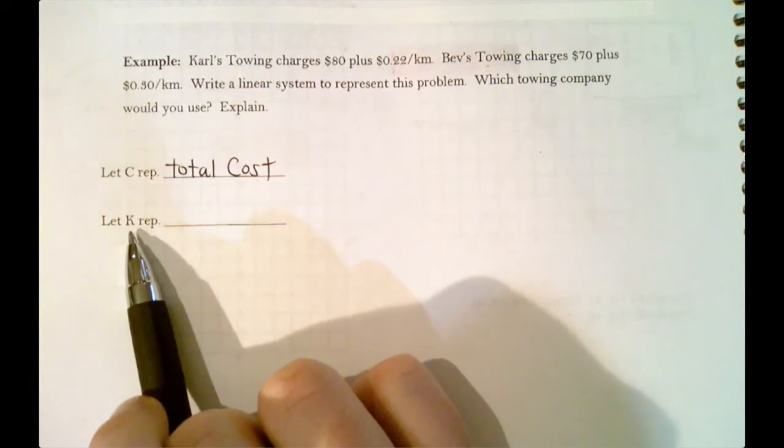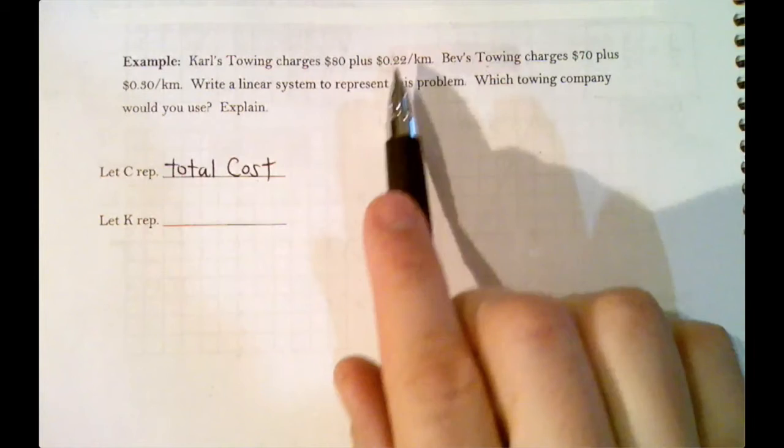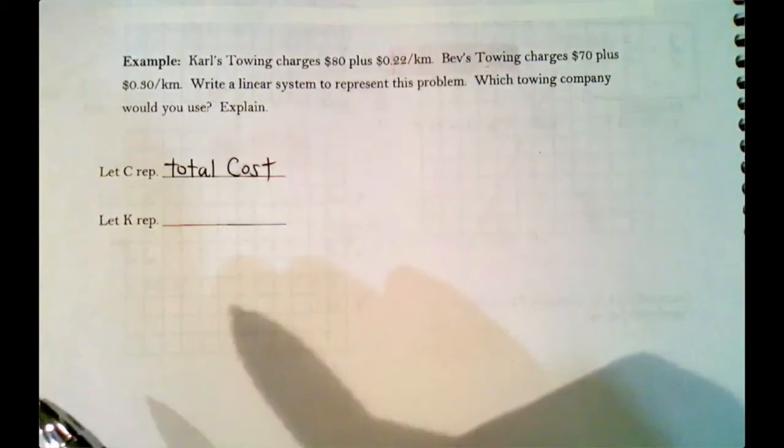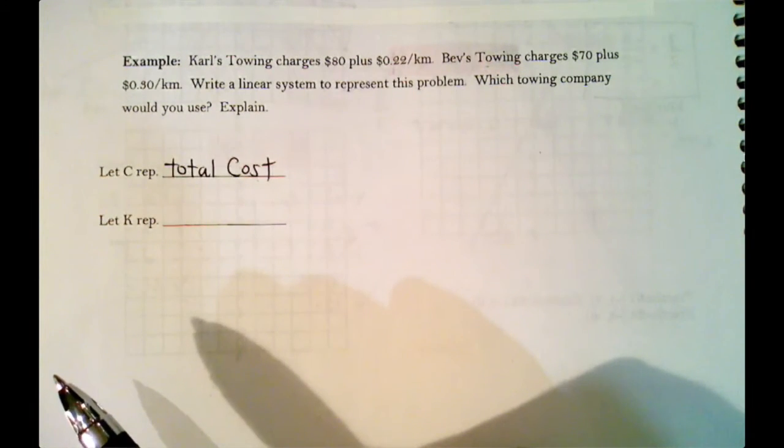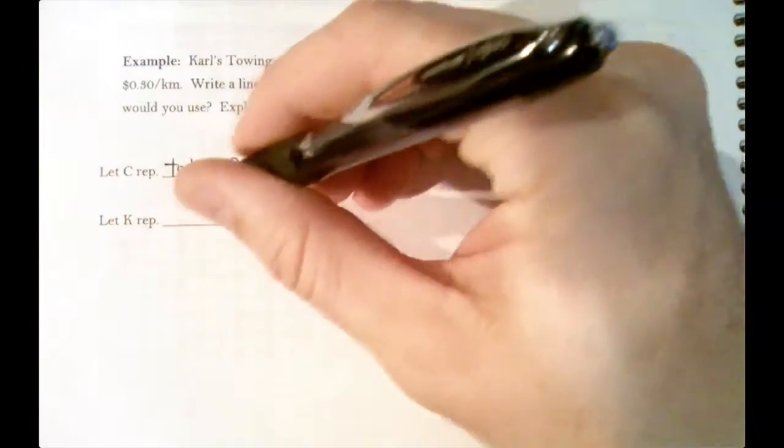And we're going to write an equation for c. We're going to write some c equals equations. And k, well why do you use the letter k? Well because the cost is going to depend on how far you go, because it's 22 cents for every kilometer. So if we go 100 kilometers, it's going to cost 122 cents. We can do some math and figure out exactly how much that is. But k is what we don't know. K is the kilometers.